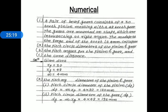Now solve this example. First collect the given data: number of teeth on pinion zp = 30, number of teeth on gear zg = 48, module at large end m = 4 mm. Determine: pitch circle diameter of pinion D_p and gear D_g, pitch angle for pinion γ and gear λ, and cone distance A_O.